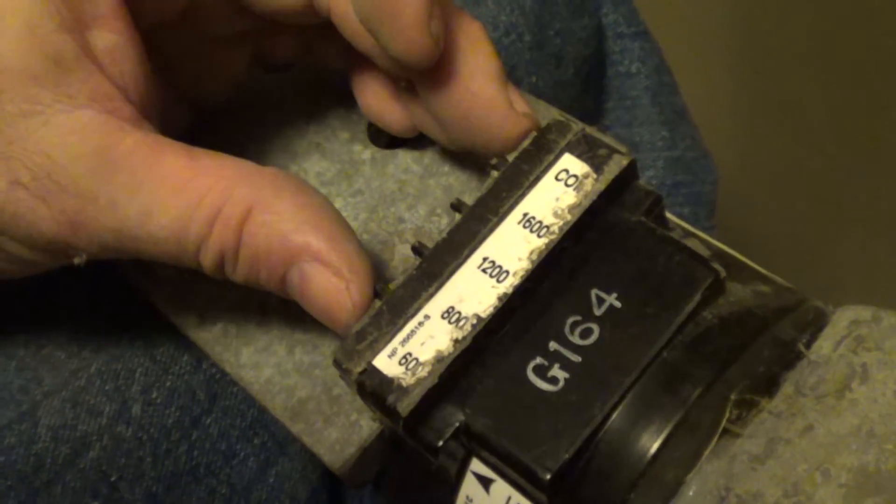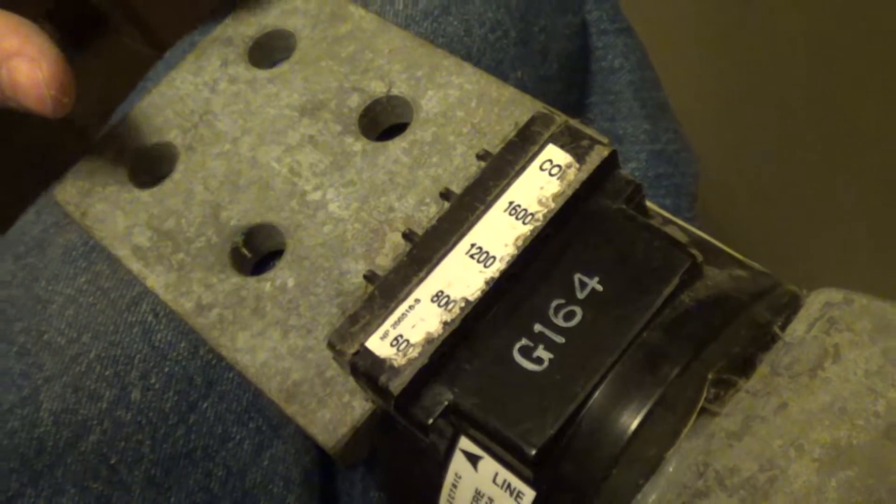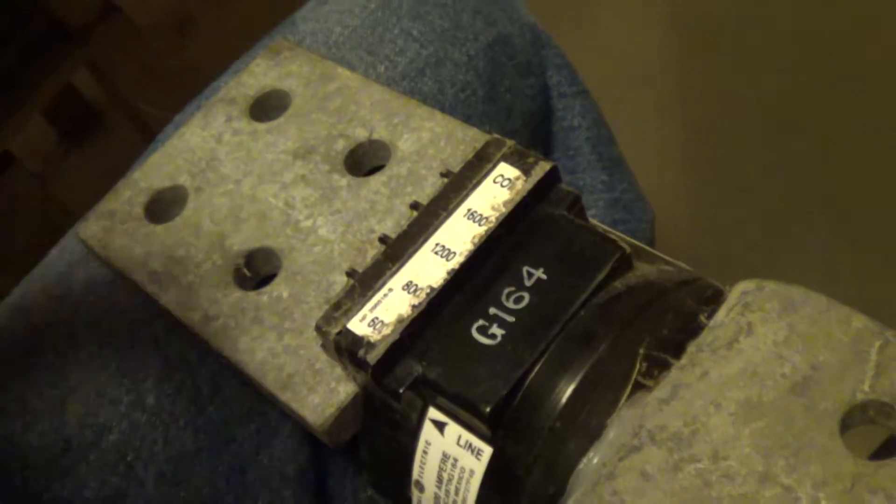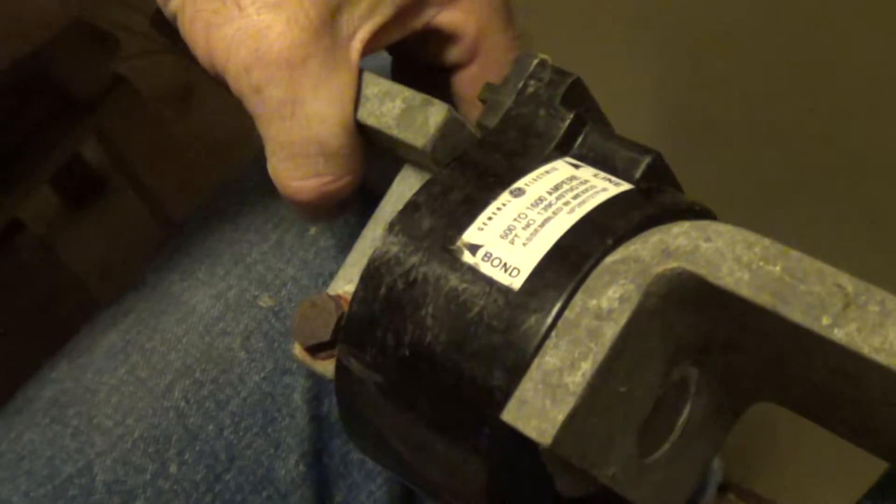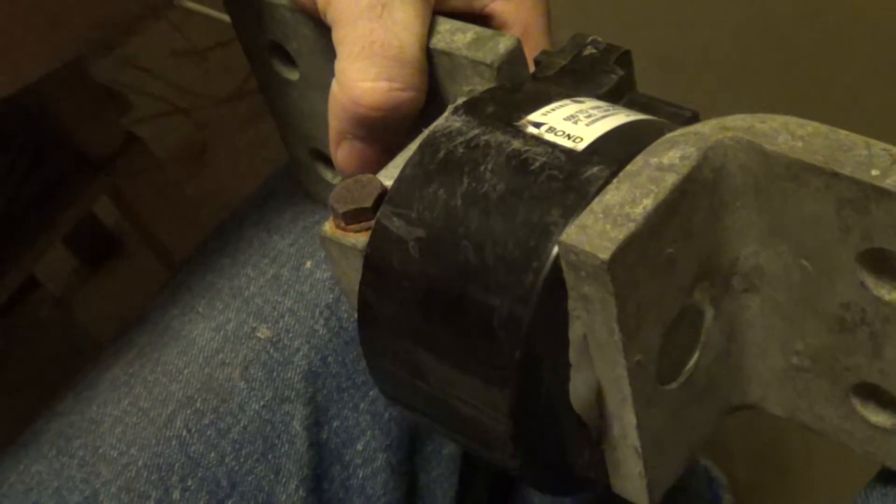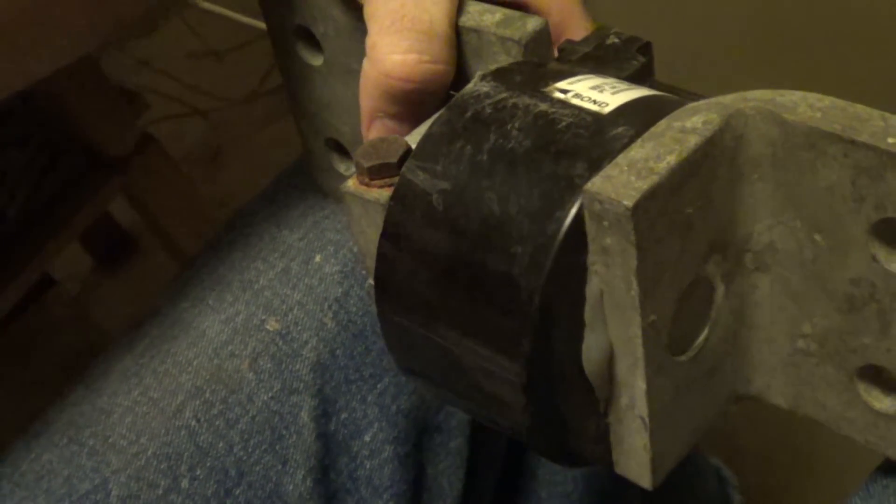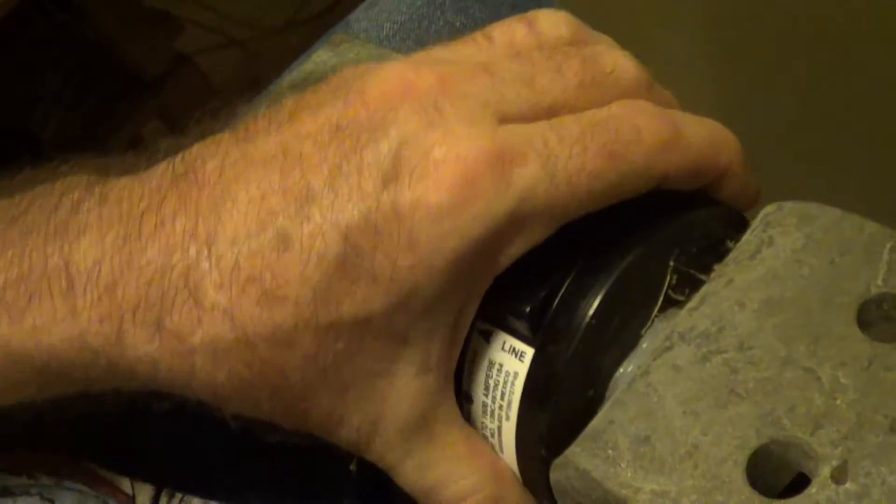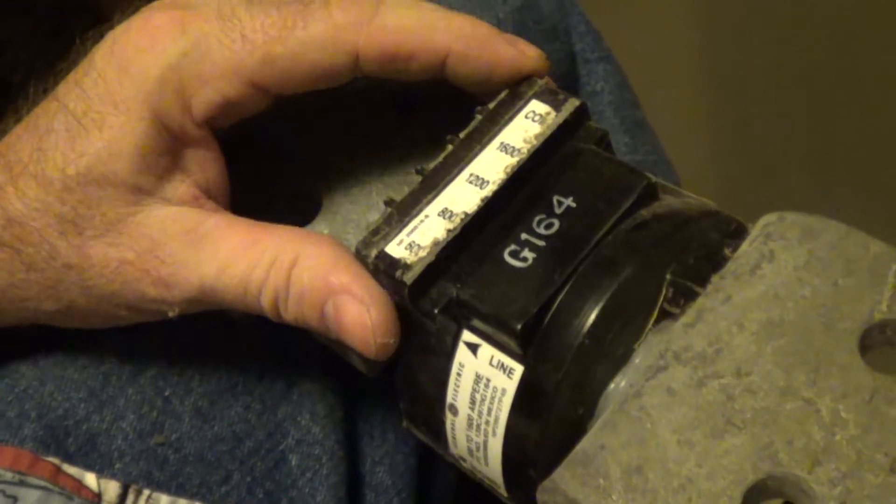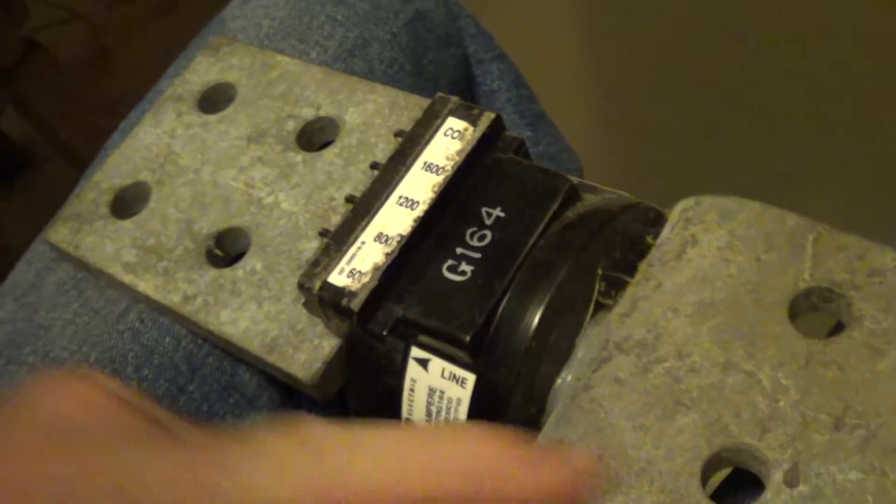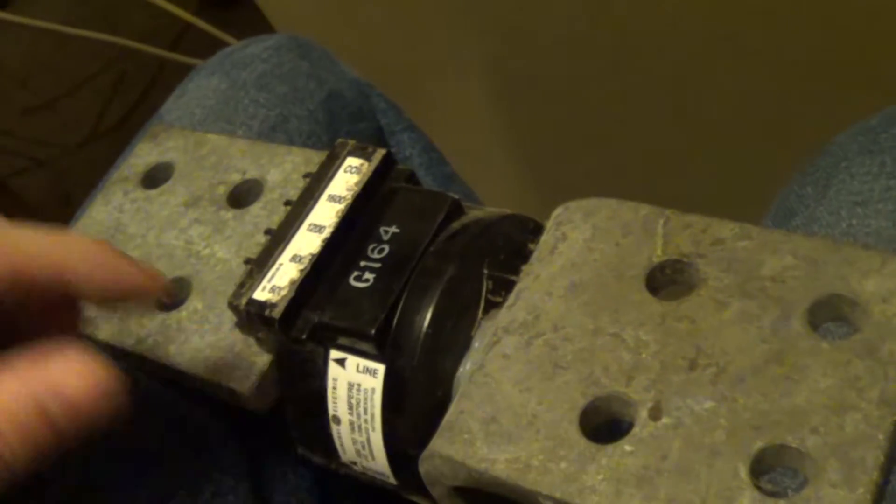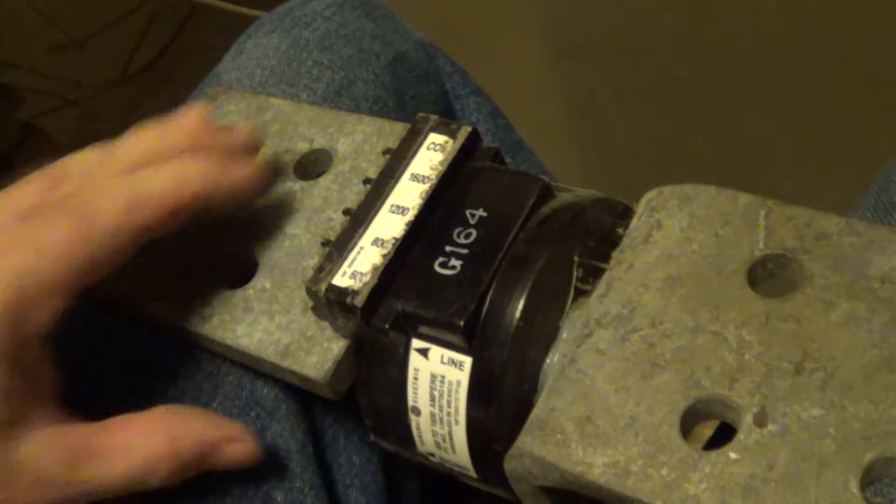So you get a current that comes out to your meter here proportional to the current through here, and that's a current transformer all built up so you don't have to run a wire through the donut. It's just got the lugs on here so the current passes through these big plates.